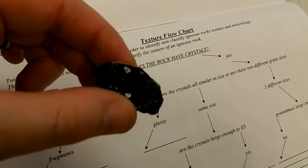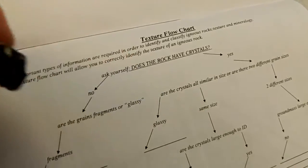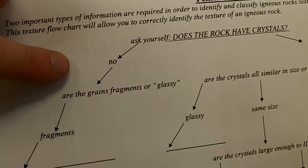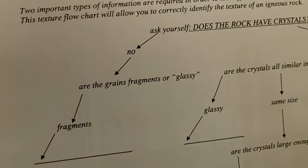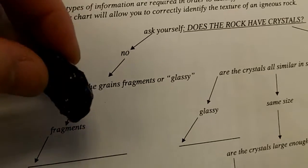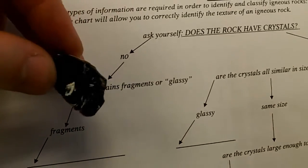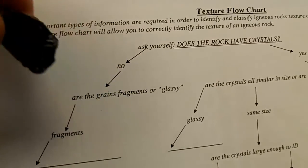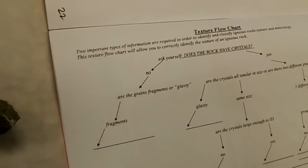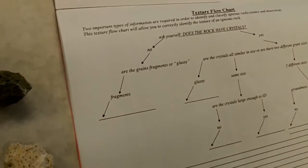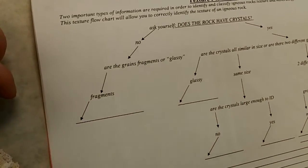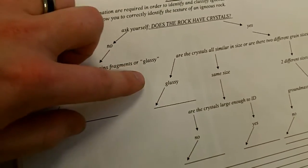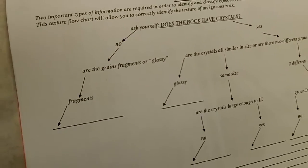On our texture flowchart, we go to the 'no' part. The second question we ask ourselves: are the grains fragments or glassy? Do you see little pieces, or is this glassy? It's glassy. So now we follow the flowchart to 'glassy.' This rock has a texture that we're going to call glassy — the kind that when you first picked it up, you might have said it looks like a piece of broken glass.